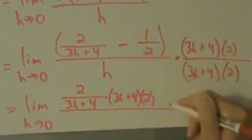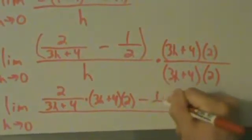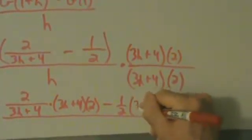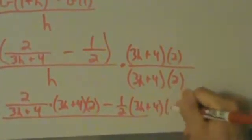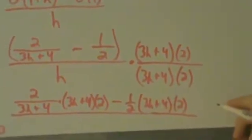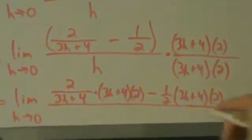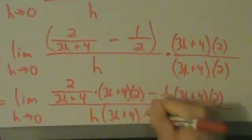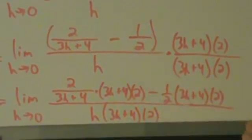(3h+4) and then 2, right? And then minus 1/2 times the same thing here: (3h+4) times 2. Okay. And then on the bottom we have h times all that same stuff: (3h+4) times 2. Okay.